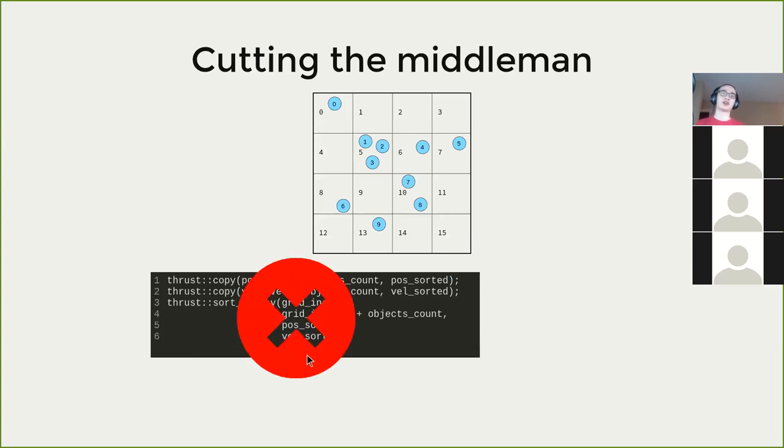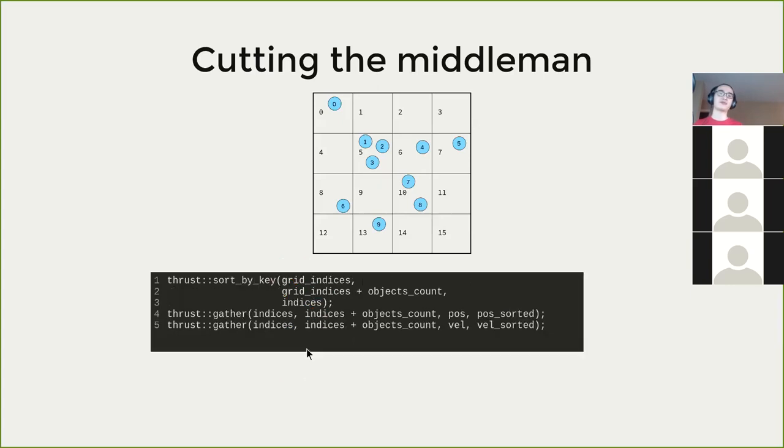Unfortunately, Thrust does not support this kind of variadic sort. So instead, Thrust has another algorithm called gather, which basically means we gather the position by these indices. And then since this is sorted, as a result, the position and the velocity will get sorted. You can read the documentation of gather and scatter for more information on how that works.